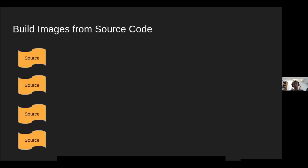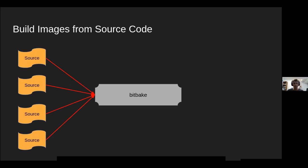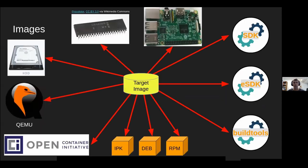Starting with the OpenEmbedded build flow: the goal is to build target images from source code. You've got a pile of source code and metadata that you feed into BitBake, and it produces what we call a target image. When we say target image, that's not exclusively something you'd flash to an SD card and run on a Raspberry Pi — although we do support probably thousands of embedded devices where you can do that.